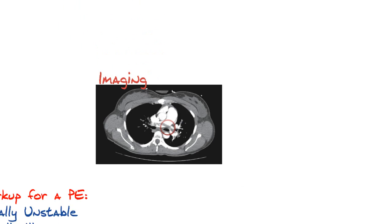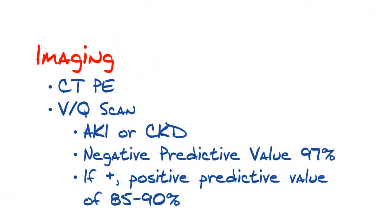CT PE studies are not the only modality for diagnosing PEs — we also have the VQ scan. The CT PE study looks for perfusion defects, while the VQ scan looks for ventilation-perfusion mismatches or defects. We use the VQ scan in patients who have poor renal function — acute kidney injury or chronic kidney disease — or in patients who are very allergic to IV dye, such as those who develop anaphylactic shock. If a VQ scan is negative, its negative predictive value is 97%, making it a very good study. If positive, the positive predictive value is 85–90%.